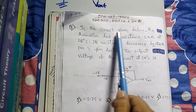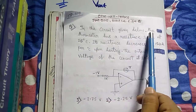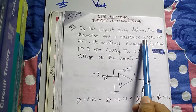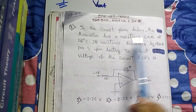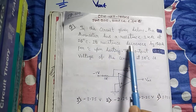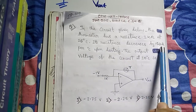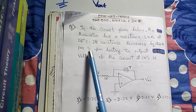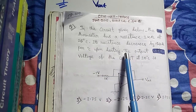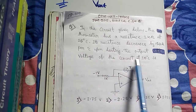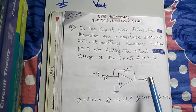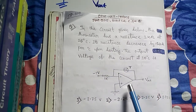In the circuit given below, the thermistor has a resistance of 3k ohm at 25 degrees Celsius. Its resistance decreases by 150 ohm per degree Celsius upon heating. The output voltage of the circuit at 30 degrees Celsius is to be found.